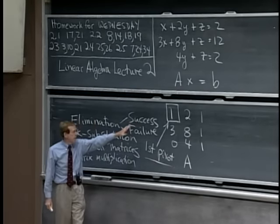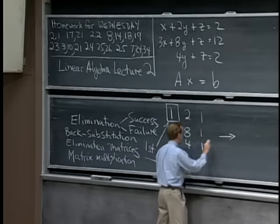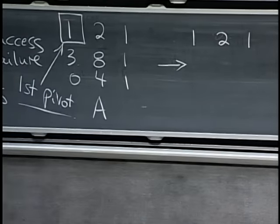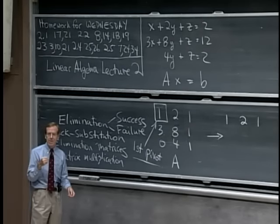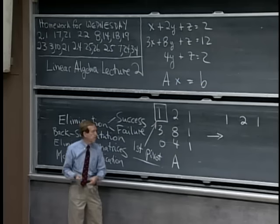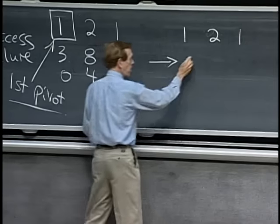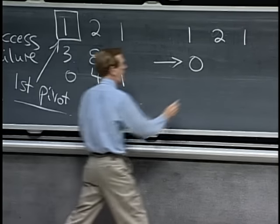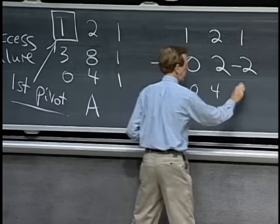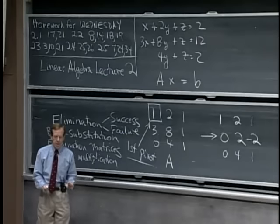Three times that will make that zero — that was our purpose. Three twos away from eight leaves two, and three ones away from one leaves minus two. This is forward elimination; that step is completed. You could ask about the right-hand side — it gets carried along. Actually MATLAB finishes the left side first and then goes back to do the right side. I'm leaving room for a column of B, the right-hand side, but I'll fill it in later.